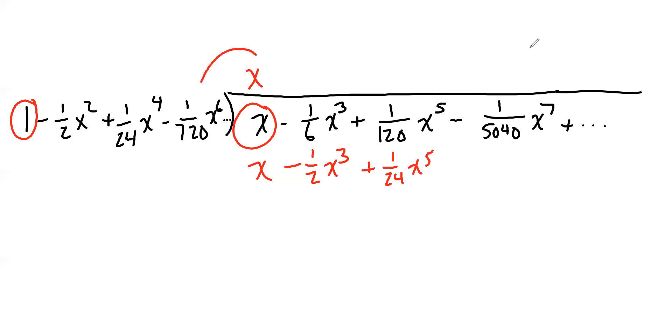x times positive 1/24 x to the 4th is positive 1/24 x to the 5th. And we may not need this one since we're only going to three terms. But x times negative 1/720 x to the 6th is negative 1/720 x to the 7th. And then we subtract carefully. x minus x is zero. We were expecting that. On the x cubes, we have negative 1/6 minus negative 1/2, which is negative 1/6 plus 1/2, which is 1/3 x cubed.